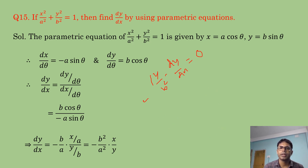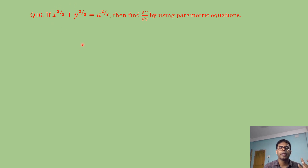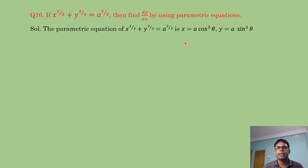Question 16 (similar type): x^(2/3) + y^(2/3) = a^(2/3). We need to find dy/dx using parametric equations. Again, x should be expressed in terms of cosine and y in terms of sine.